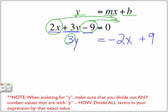When isolating for y, make sure that you divide out any number values that are with y. How do we do that? Well, we divide all terms, every single term in our expression by that exact value. So we want to get rid of this number 3 that is in front of y. Well, we're going to divide this by 3.